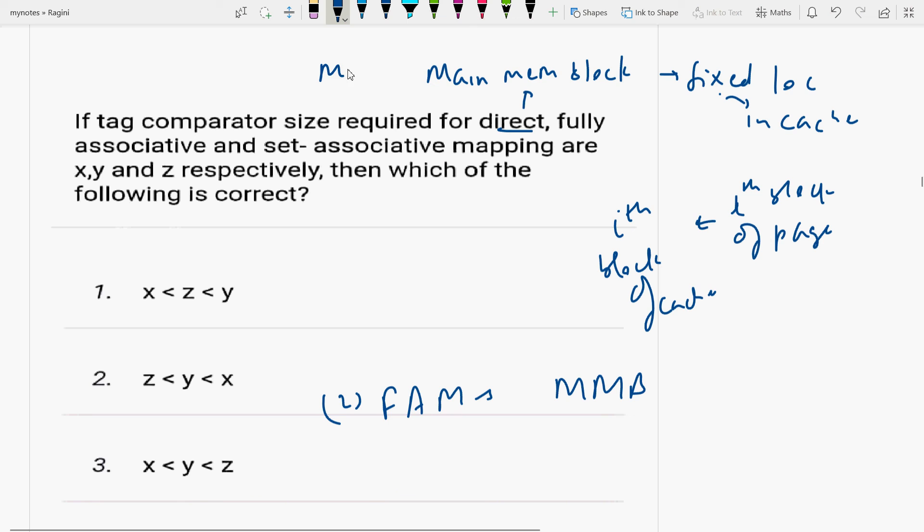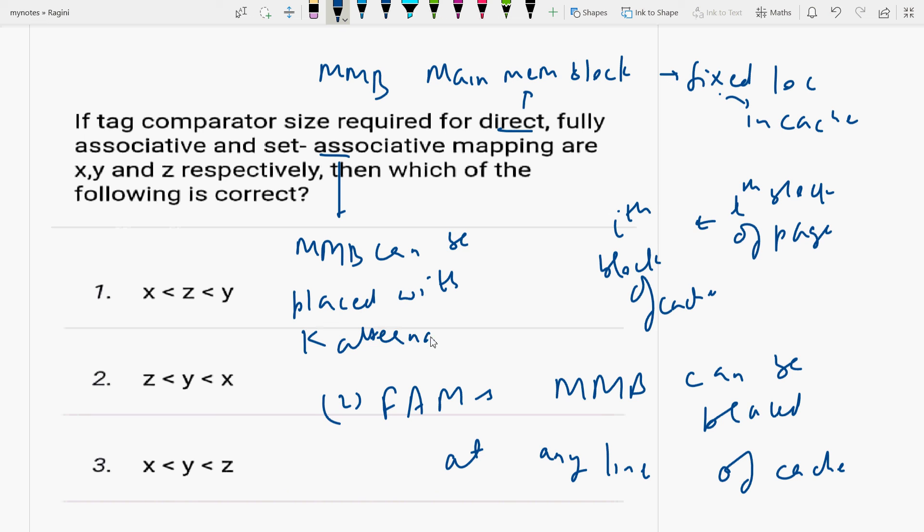The main memory block can be placed at any line of cache. In set associative mapping, a main memory block can be placed with k alternatives in a set.